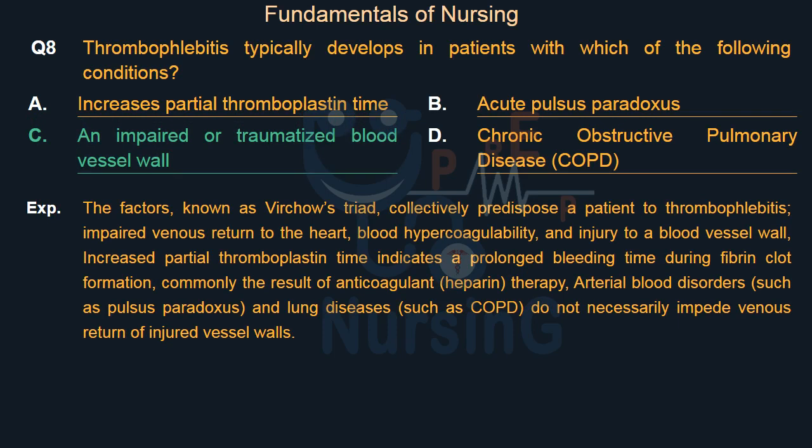The factors known as Virchow's triad collectively predispose a patient to thrombophlebitis: impaired venous return to the heart, blood hypercoagulability, and injury to a blood vessel wall. Increased partial thromboplastin time indicates a prolonged bleeding time during fibrin clot formation, commonly the result of anticoagulant (heparin) therapy. Arterial blood disorders such as pulsus paradoxus and lung diseases such as COPD do not necessarily impede venous return or injure vessel walls.